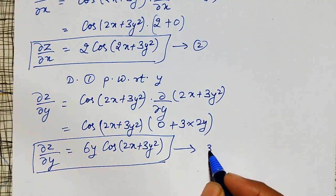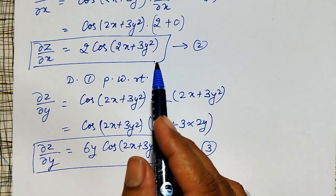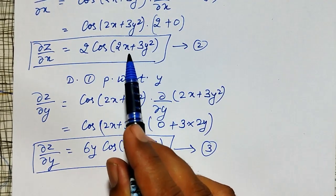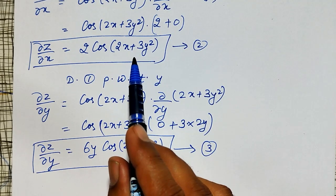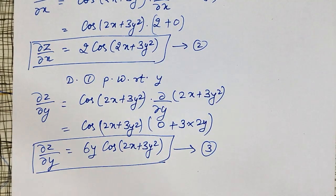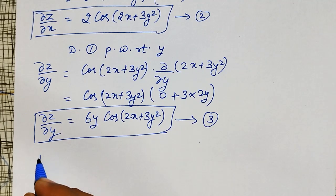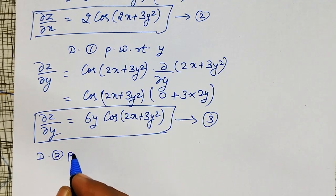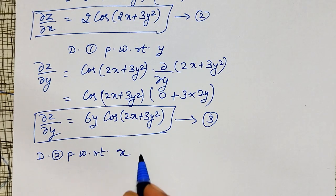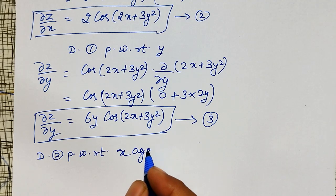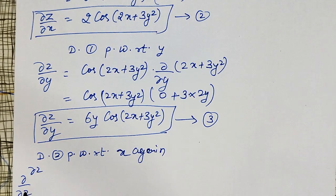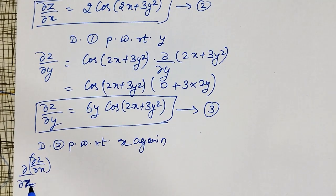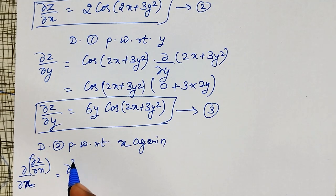Let me call this equation number three. Now observe that equation two is again a function of both x and y, so it can be differentiated partially with respect to both x and y — those will be our second order partial derivatives. Differentiating equation two partially with respect to x again: the notation is ∂/∂x(∂z/∂x), denoted by ∂²z/∂x².